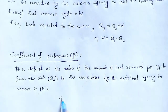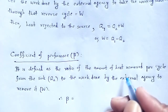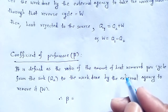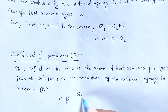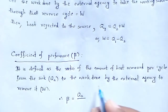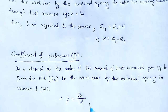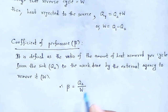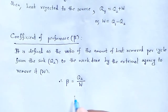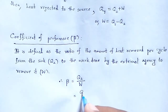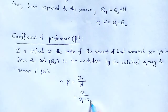Mathematically, beta is equal to Q2 divided by W. In place of W, we can substitute Q1 minus Q2. So beta equals Q2 divided by Q1 minus Q2.